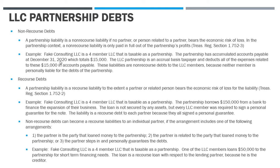Looking at an example: we have a fake consulting LLC, a four-member LLC taxed as a partnership. The partnership has accounts payable at the end of the year of $15,000. The partnership is an accrual basis taxpayer — it deducted all those costs. That $15,000 might be labor, supplies, or office expense where they received the goods and services but just haven't paid the bill yet.